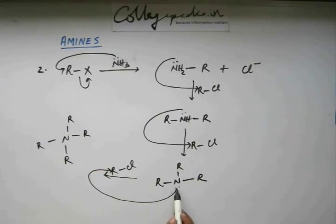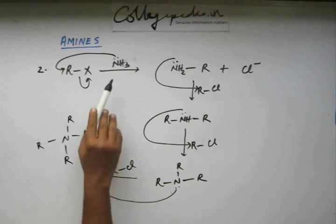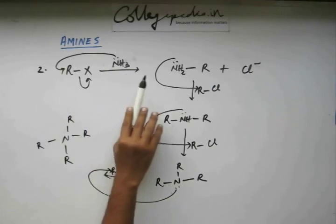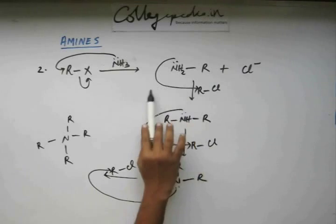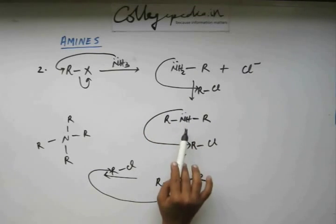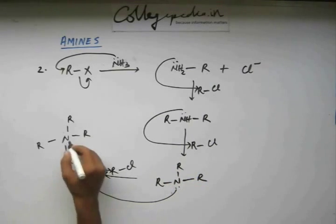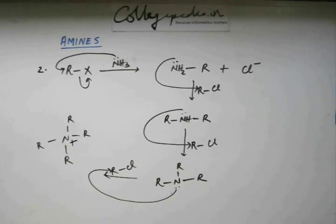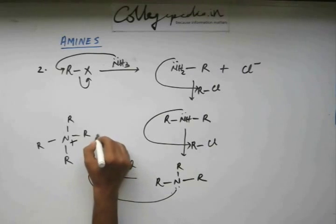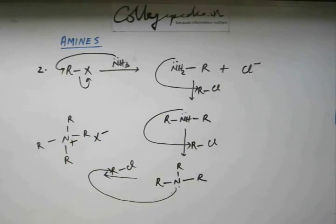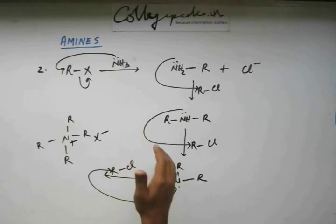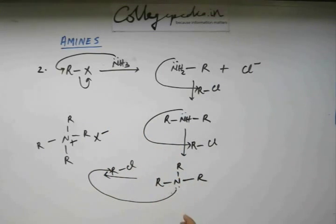This tertiary amine again has nitrogen with a lone pair, so the reaction may not stop. The three degree amine may also attack R, forming a quaternary ammonium salt. This time, when nitrogen gains a plus charge, it has no mechanism to remove it — there is no hydrogen left to remove — so the plus charge stays on nitrogen and X comes to form a salt.